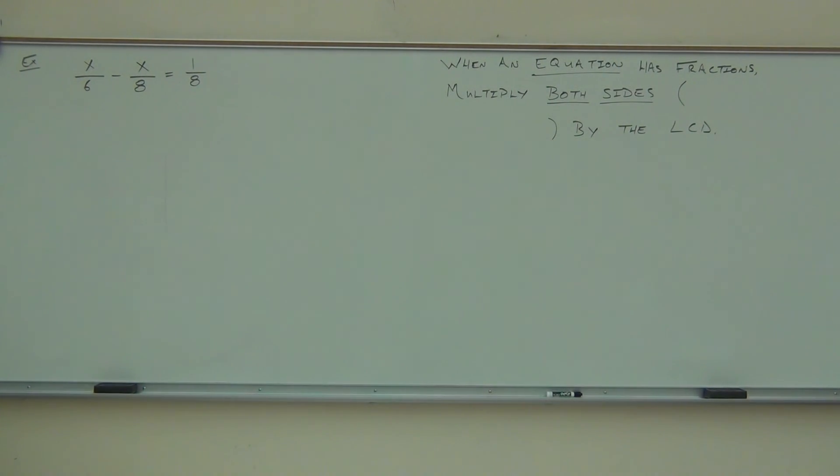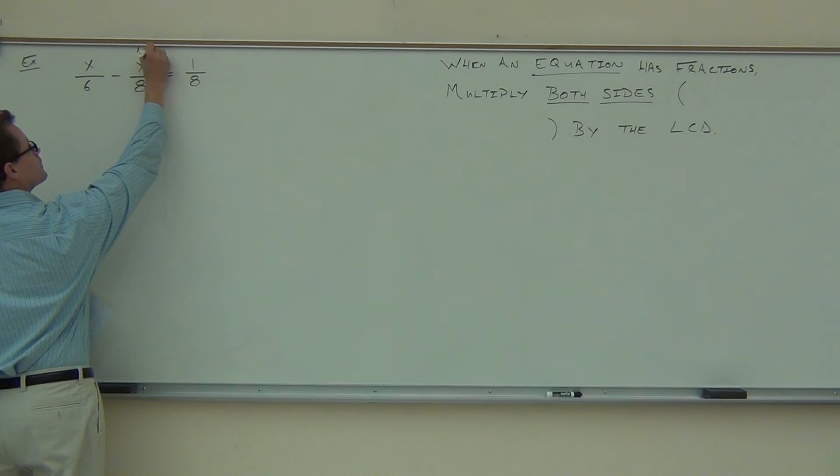How do you find the LCD? Let's review that for a second. Do you just multiply the numbers together? That's one way to find a common denominator, but it definitely might not be the smallest common denominator, the least common denominator. So, one good way to find the LCD, take the biggest denominator that you have, in our case, eight. Start finding multiples on that thing. So, the first multiple is eight. Does six go into eight? So, go bigger. What's the next multiple of eight? Does six go to 16? What's the next one? Does six go to 24? That's how you find your least common denominator.